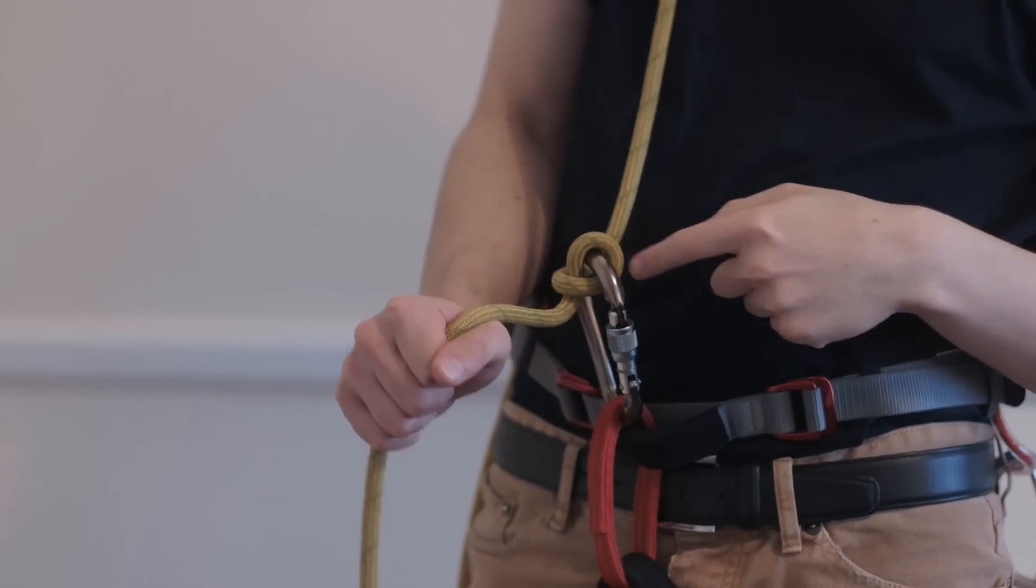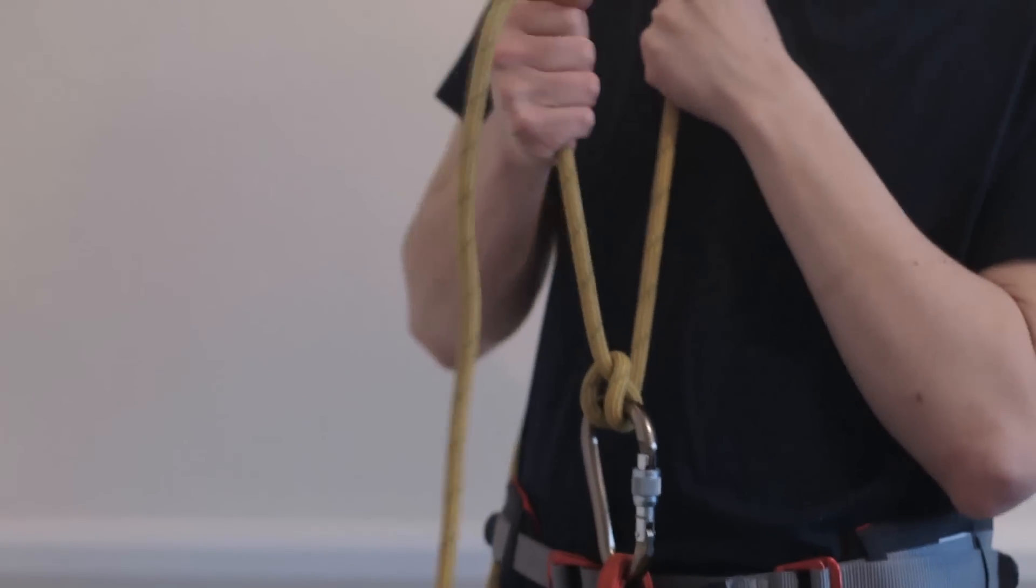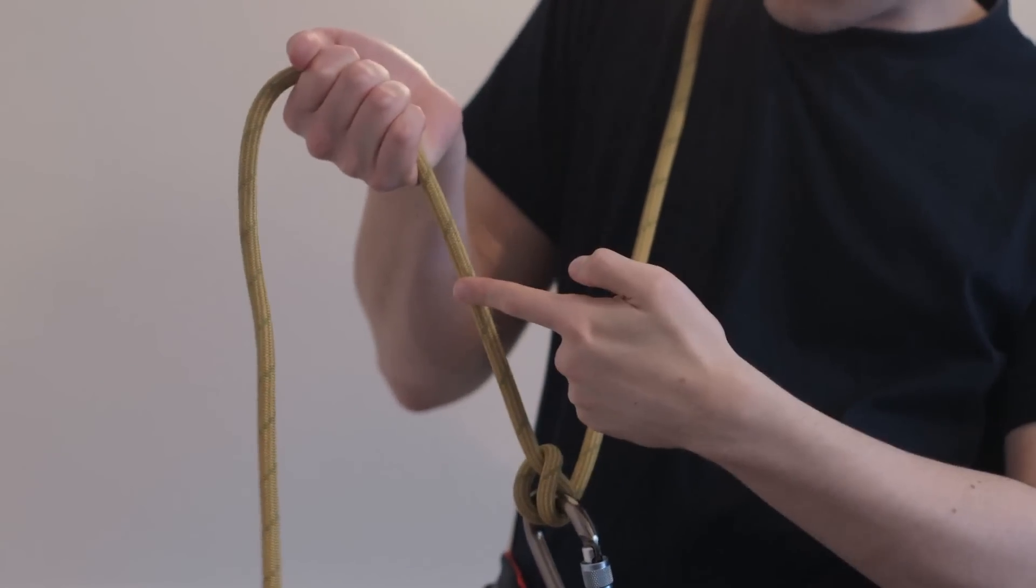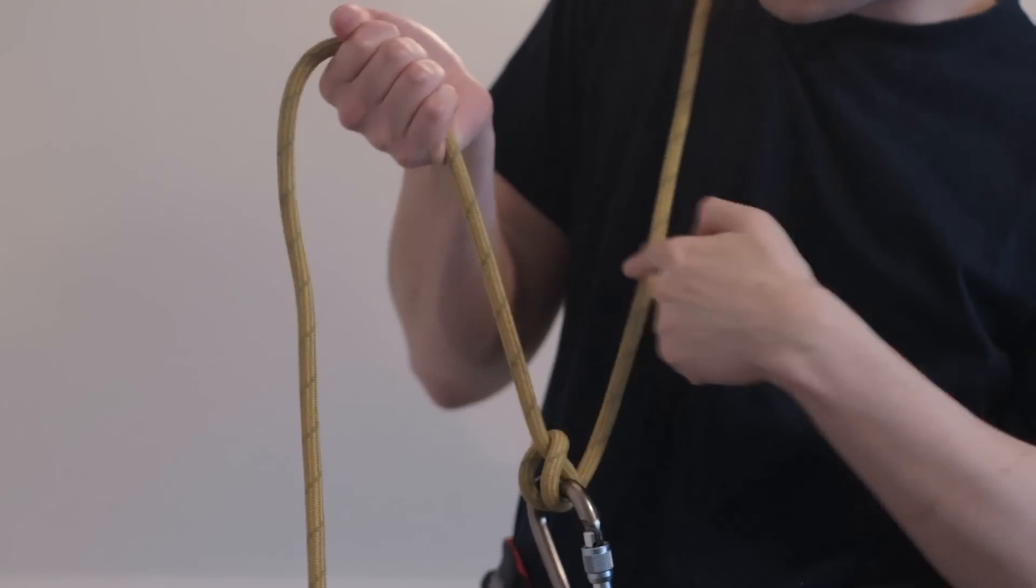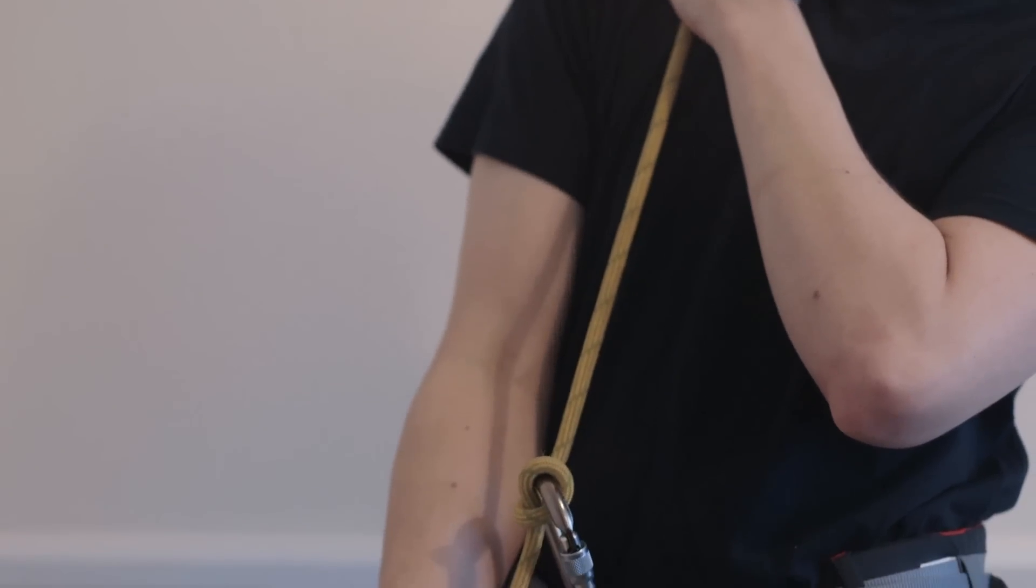It's a lot more effective, as I said before, if you bring your brake hand up like so. This is the strongest position, because the brake end of the rope and the climber's end are parallel, they're next to each other, as opposed to just being in opposite directions.